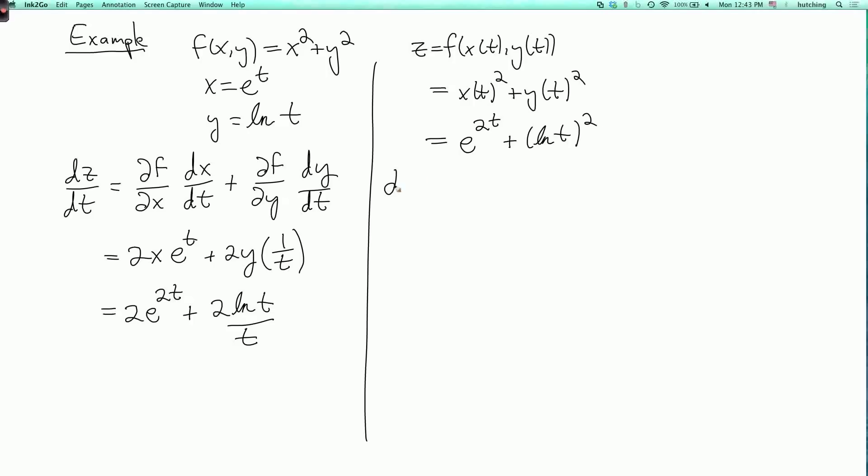And then if I just differentiate this, the derivative of e to the 2t is 2e to the 2t, and the derivative of log t squared is 2 times log t times the derivative of log t, which is 1 over t. And I got the same answer.